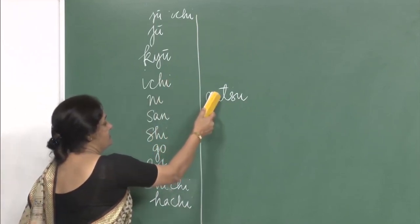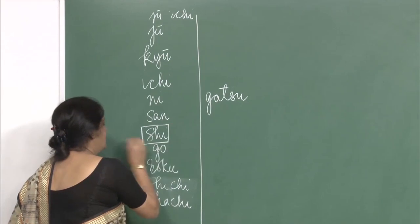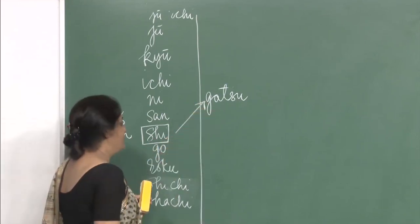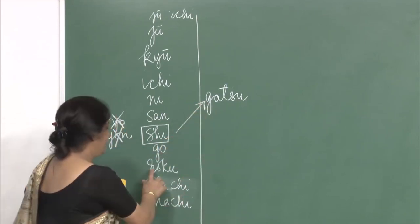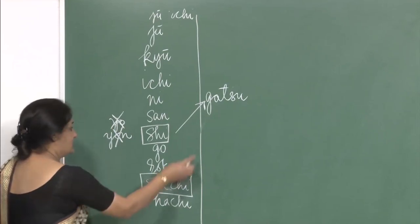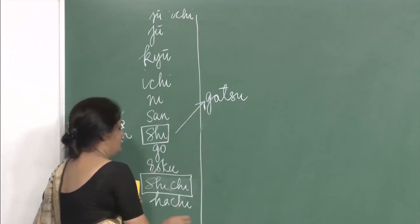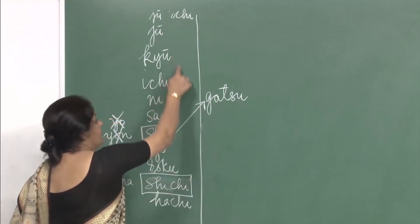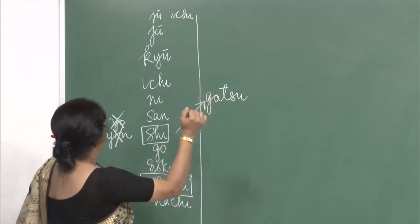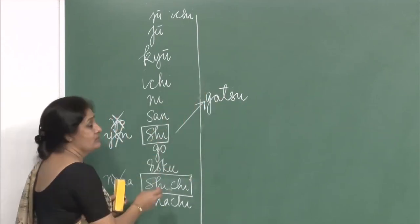You can go like this: ichi gatsu — January, ni gatsu — February, san gatsu — March, shi gatsu — April (not yon gatsu or yo gatsu, it is shi gatsu), go gatsu — May, roku gatsu — June, shichi gatsu — July (not nana gatsu), hachi gatsu — August, kugatsu — September, juu gatsu — October, juu ichi gatsu — November, and juu ni gatsu — December.